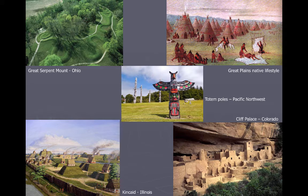The totem poles in the Pacific Northwest tell stories and help preserve the culture, religion, and history of the tribes. Where does this come from? Cedar forest — heavily forested area with plenty of wood. It's a great illustration of how they used the geography and environment of their area to define their civilization.